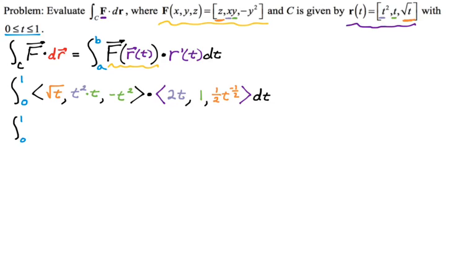For dot product, I just do corresponding components, multiply them, and then sum everything up. First, I'm going to multiply this and this to get 2t^(3/2). And then it's going to be plus, multiply those, you get just plus t cubed. And then plus, I'm going to multiply these and get negative 1/2 t^(3/2).